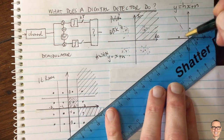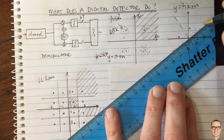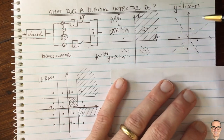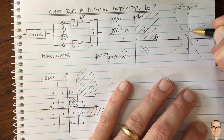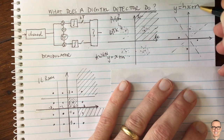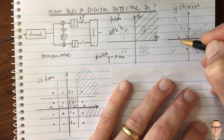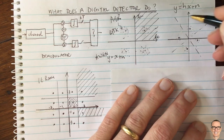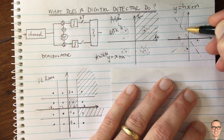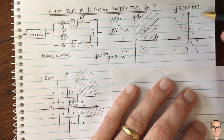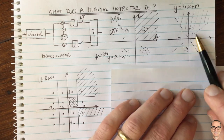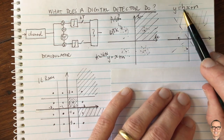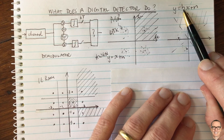You can find those rotated decision boundaries and then work out the bit error rate. There'll be a cloud around the constellation points because of the noise. The channel is effectively rotating them and the noise creates a cloud around them. You can work out the bit error rate for each region, though you also have the extra difficulty of estimating H.